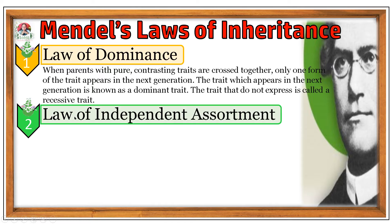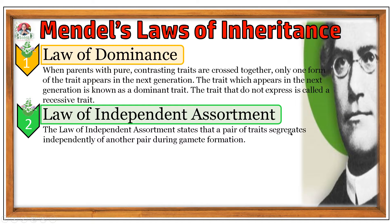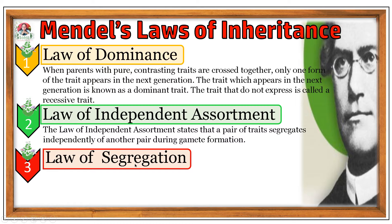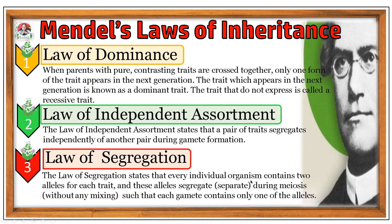Mendel's second law of inheritance is the law of independent assortment. This law states that a pair of traits segregates independently of another pair during gamete formation. Mendel's third law of inheritance is known as the law of segregation, and this law states that every individual organism contains two alleles for each trait, and these alleles segregate during meiosis such that each gamete contains only one of the alleles.